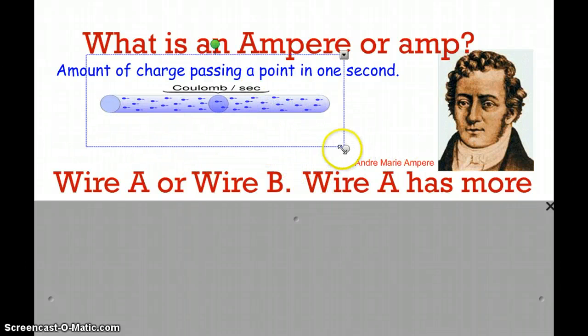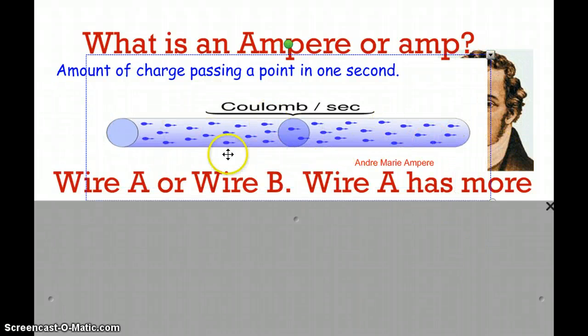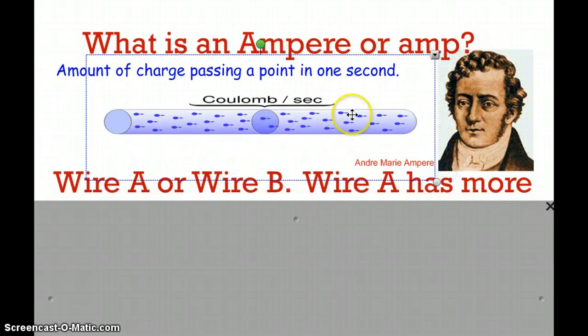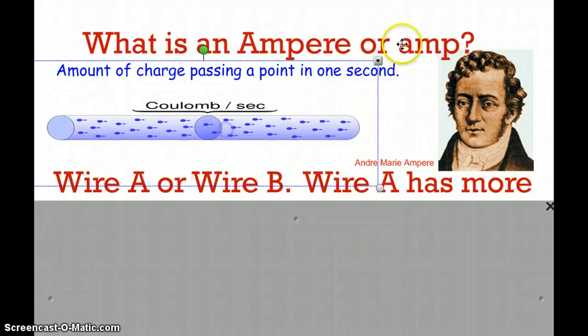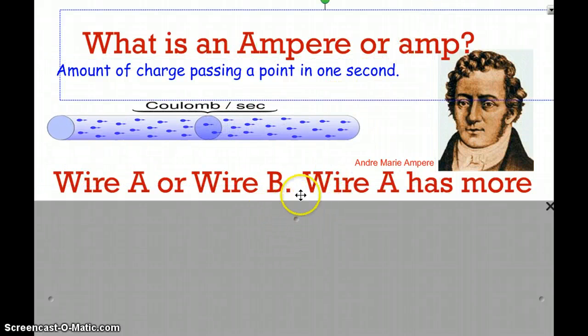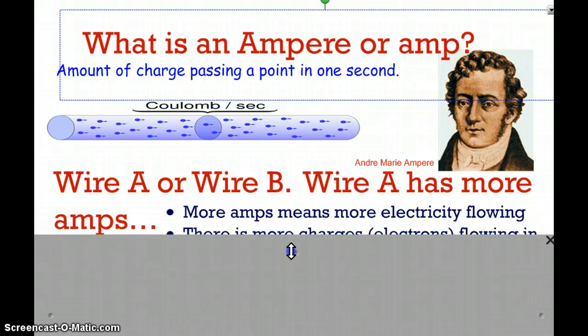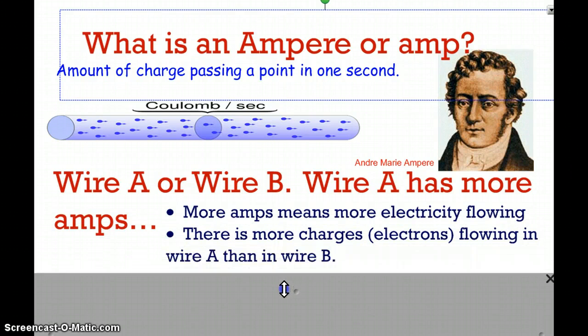If we could picture electrons moving through an area, and if we were counting the number of electrons moving through that area in one second, that is similar to what an amp would be. Wire A or wire B: if wire A has more amps, this means that more electricity is flowing. There are more charges or electrons flowing in wire A than in wire B in one second. So that's amps.